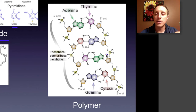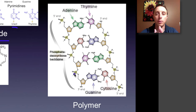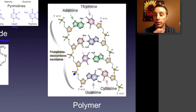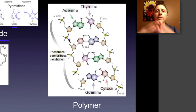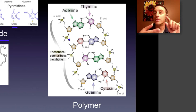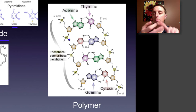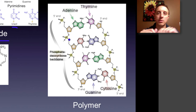Here is an example of a DNA polymer. DNA, of course, has the double-stranded double helix structure. You can see the individual monomers all linked together in a chain. The most important function of nucleic acids is the information system — information storage and information retrieval — and we'll talk much more about those two things in the genetics unit.